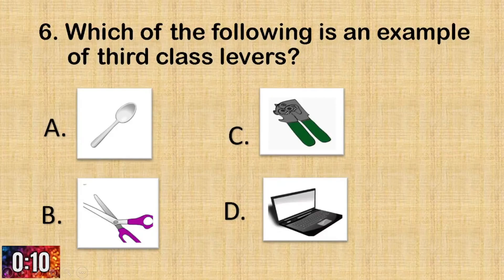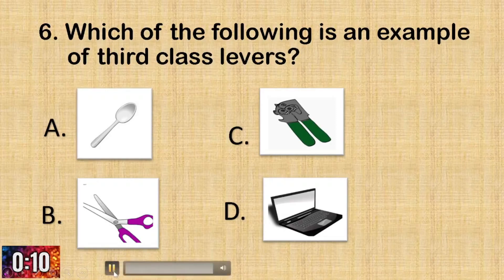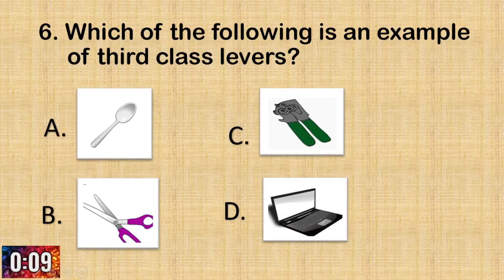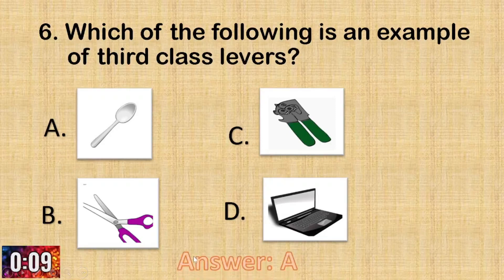Question number six. Which of the following is an example of third-class levers? The correct answer is letter A: spoon.